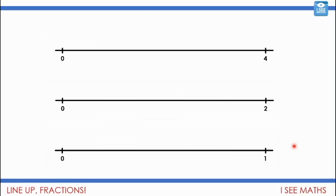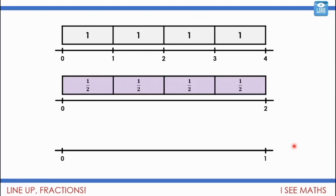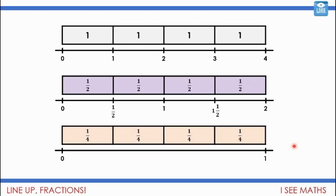Now let's look at another way that number lines can be broken up. Starting with a straightforward one — zero to four. If I split that into four equal pieces, then I have steps of one: 1, 2, 3, 4. What about if I split zero to two into four equal pieces? This time I'd be going up in steps of a half: a half, one, one and a half, two. And if I'm splitting zero to one into four pieces, just like before, we split into quarters: a quarter, two quarters, three quarters, and one.